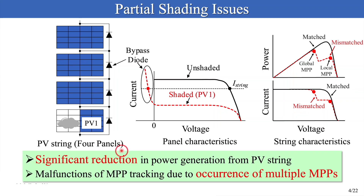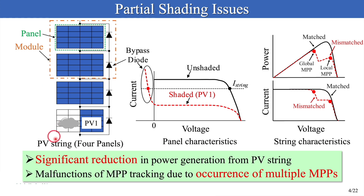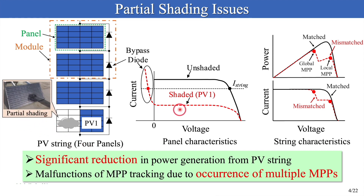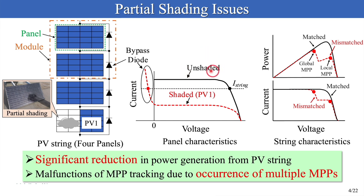Background. In general, a standard PV string consists of multiple panels and modules in series. Four panels connected in series are shown as an example in this slide. When partial shading occurs, panel characteristics between the shaded panel and unshaded panels are mismatched, as shown in the center figure. The horizontal axis is voltage and the vertical axis is current. The red dotted line shows the shaded panel, while the black line shows unshaded panels.